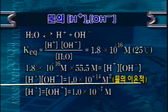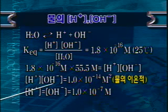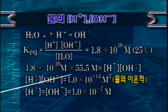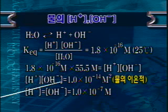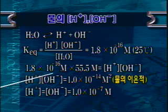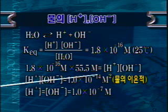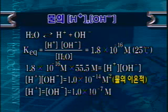물에 산이나 염기가 첨가된다고 해도 수소이온 농도와 수산이온 농도를 곱한 Kw 값은 그대로 유지됩니다. 물에 산을 첨가해서 수소이온 농도가 증가하면 수산이온 농도가 감소하고, 염기를 첨가해서 수산이온 농도가 증가하면 반대로 수소이온 농도가 감소합니다. 중성은 수소이온 농도와 수산이온 농도가 10⁻⁷ mol로 동일한 경우이고, 산성은 수소이온 농도가 10⁻⁷ mol 이상인 경우, 염기성은 반대가 됩니다.